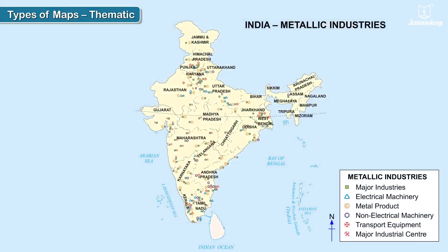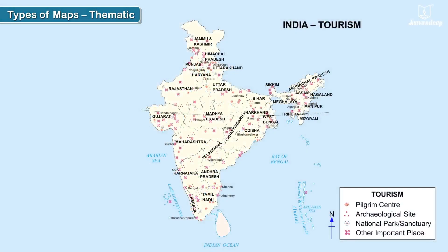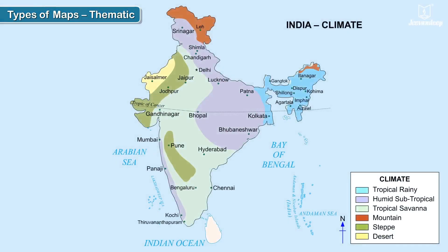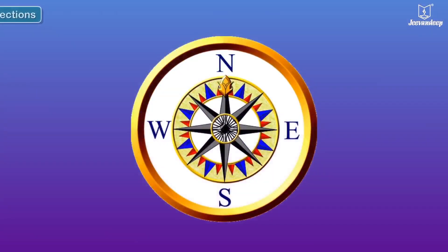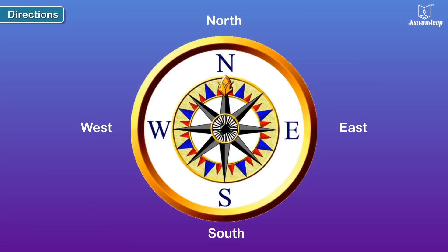Thematic maps can also show temperatures, industries, places of tourist interest, etc. The thematic map shown here shows the climatic regions in India. We know that east, west, north, and south are the four main directions.